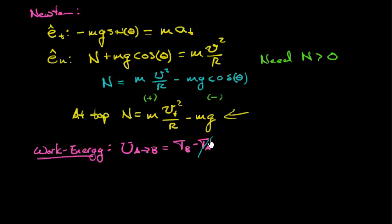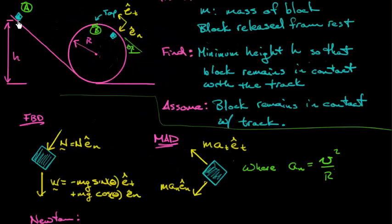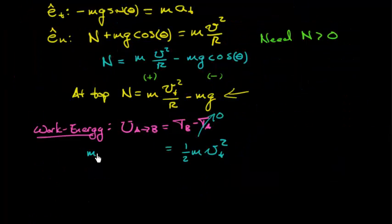Notice the kinetic energy at point A is going to be zero because we're released from rest. TB, that's one half mass times speed at the top squared. And this has to equal the work done by the weight. The work done by weight is mg times the change in elevation. We start off at an elevation of h above zero, and we end up at a height, when we're at point B, at a height two times the radius. When we get down here, this work is mg times h minus twice the radius. So there's the distance dropped, or the elevation dropped.